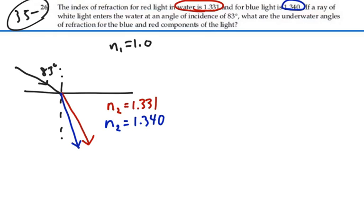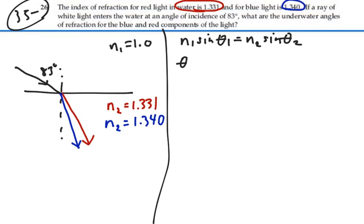So, Snell's Law will apply for both of these wavelengths of light. In particular, N1 sine theta 1 will equal N2 sine theta 2. We want to find theta 2, so theta 2 will be the inverse sine of N1 over N2 sine theta 1.